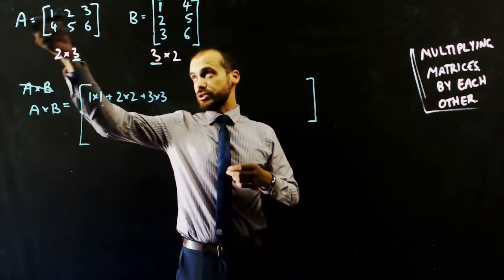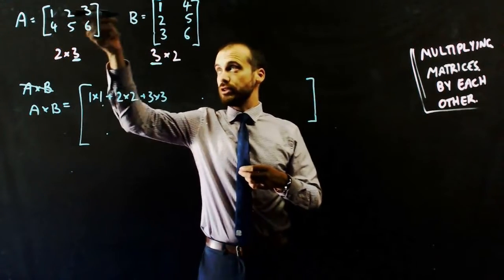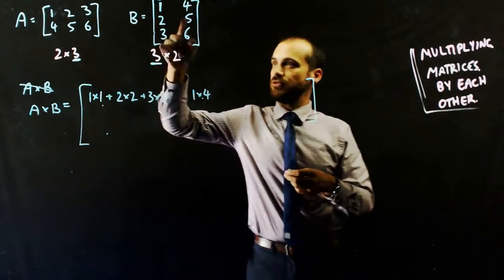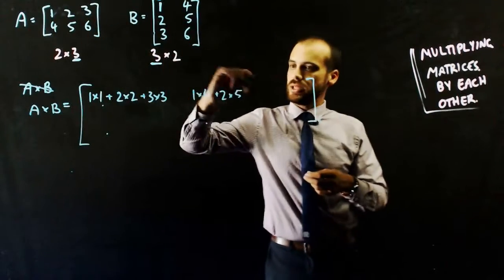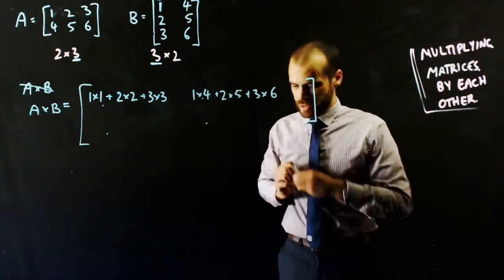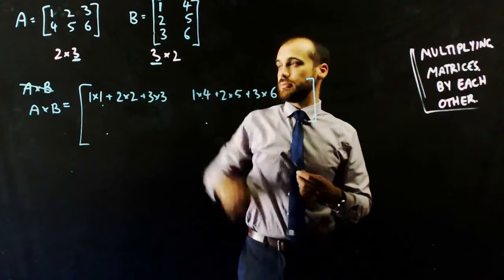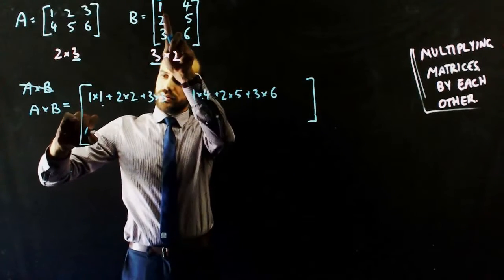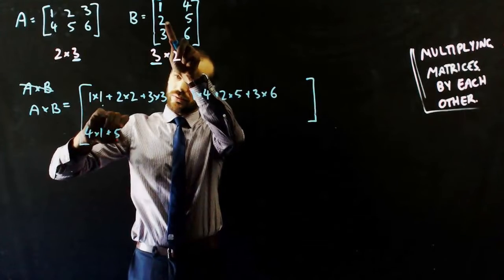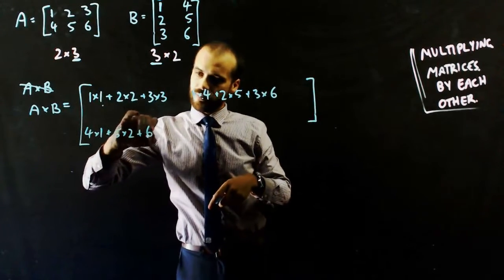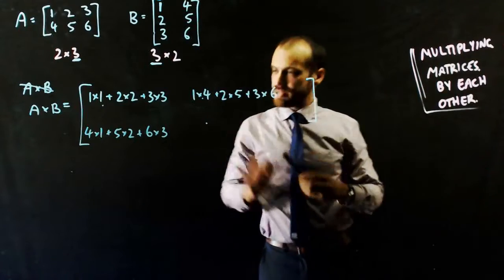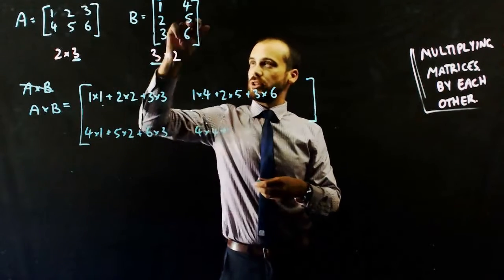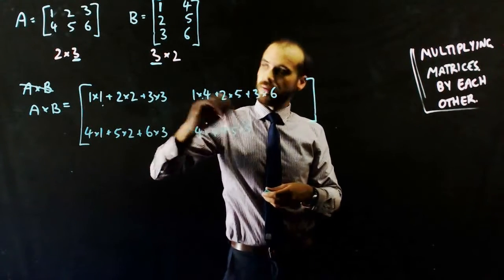Three more elements to go. I've done first row times first column, and now I'm going to do the first row times the second column: 1 times 4, plus 2 times 5, plus 3 times 6. This next one is the second row times the first column: 4 times 1, plus 5 times 2, plus 6 times 3. And finally, this last element is the second row times the second column: 4 times 4, plus 5 times 5, plus 6 times 6.